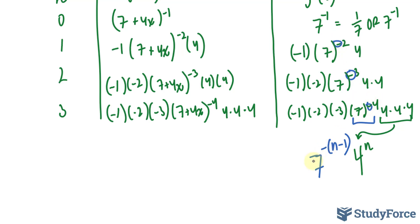That is accounted for with this negative. And since we have 4 when it's 3 and 3 when it's 2, it's always 1 less than n. This part is taken care of.